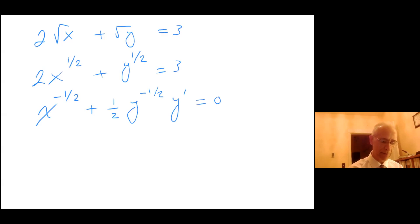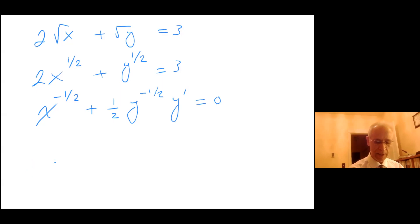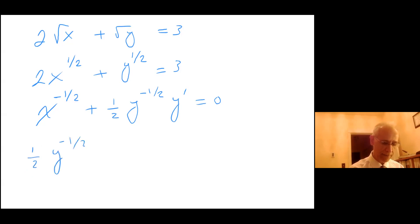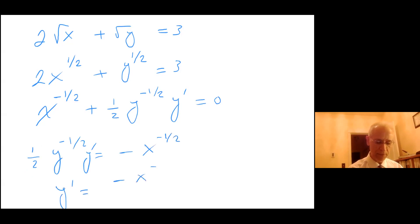So I have y prime: taking x to the negative one half to the other side, I get one half y to the negative one half y prime equals minus x to the negative one half.